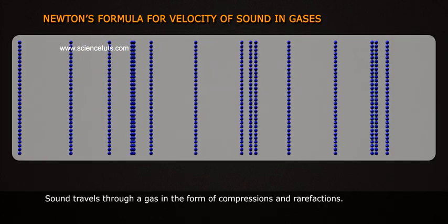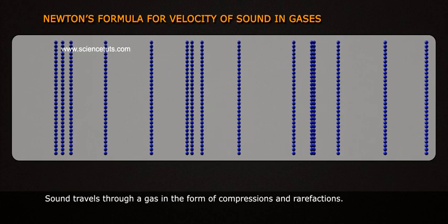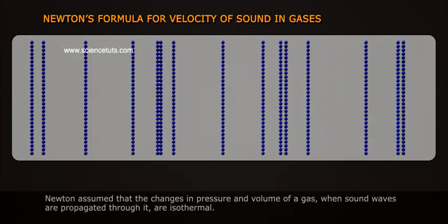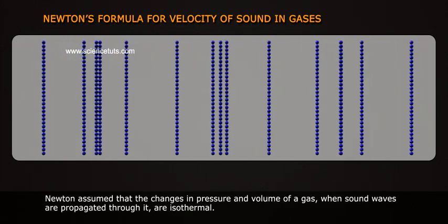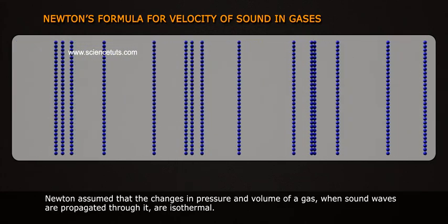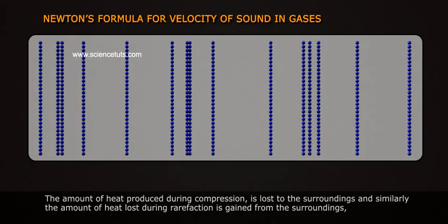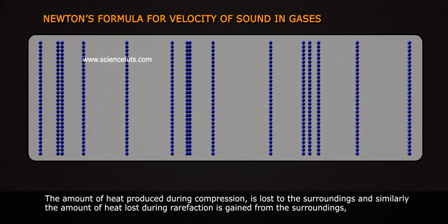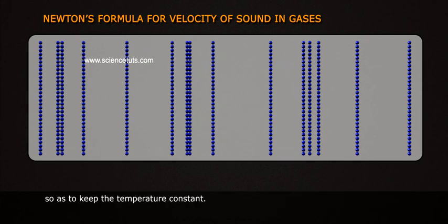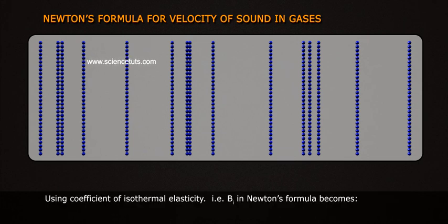Sound travels through a gas in the form of compressions and rarefactions. Newton assumed that the changes in pressure and volume of a gas, when sound waves are propagated through it, are isothermal. The heat produced during compression is lost to the surroundings, and the heat lost during rarefaction is gained from the surroundings, so as to keep the temperature constant.